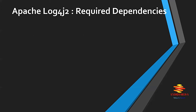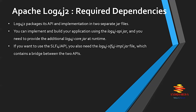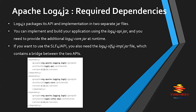Log4j2 packages its API and implementation in two separate JAR files. You can build your application using log4j-api.jar, and you need to provide the additional log4j-core.jar at runtime. If you want to use the SLF4J API, you also need the log4j-slf4j-impl.jar file, which acts as a bridge between the two APIs. You can see how to configure these dependencies in the example shown.